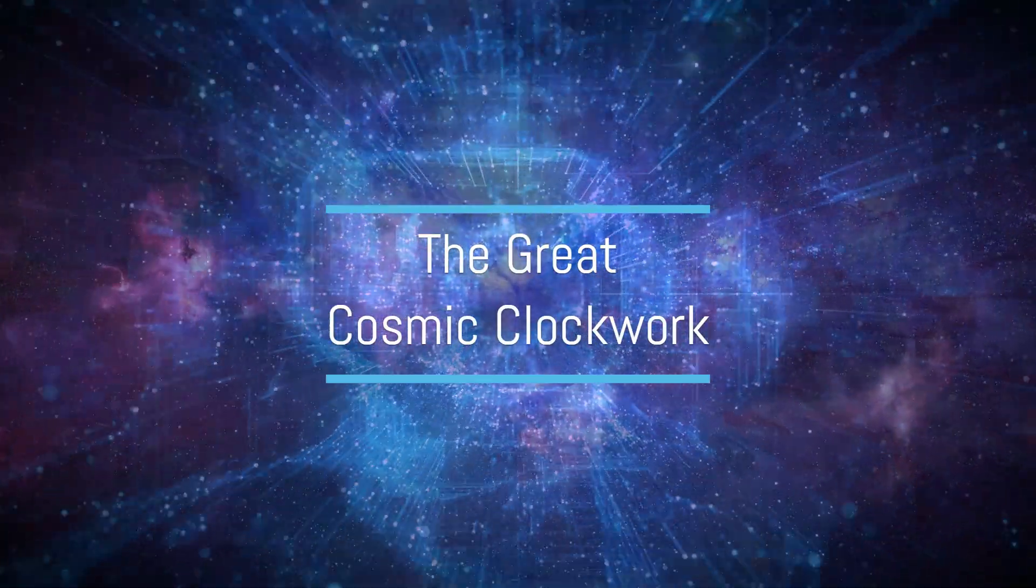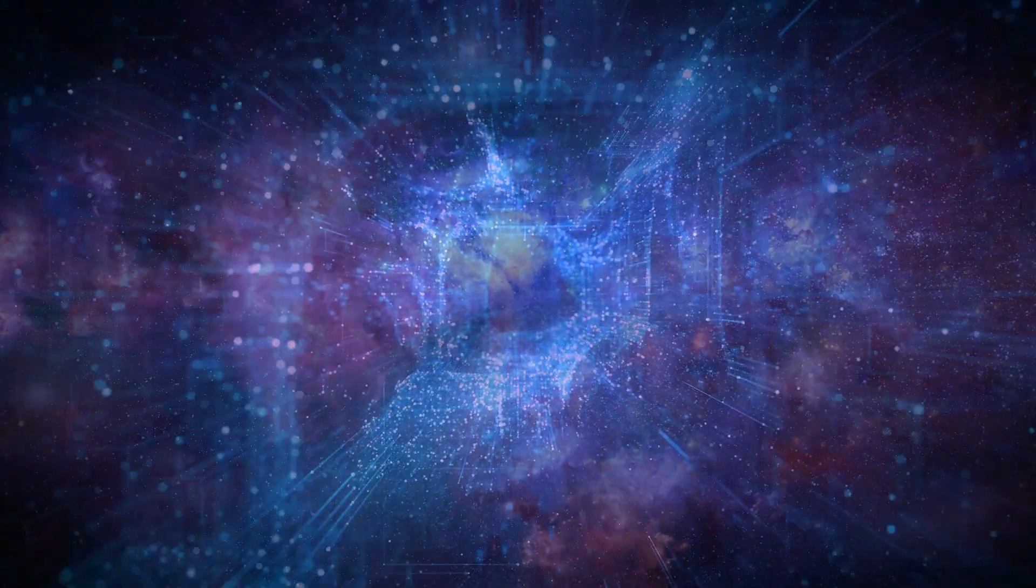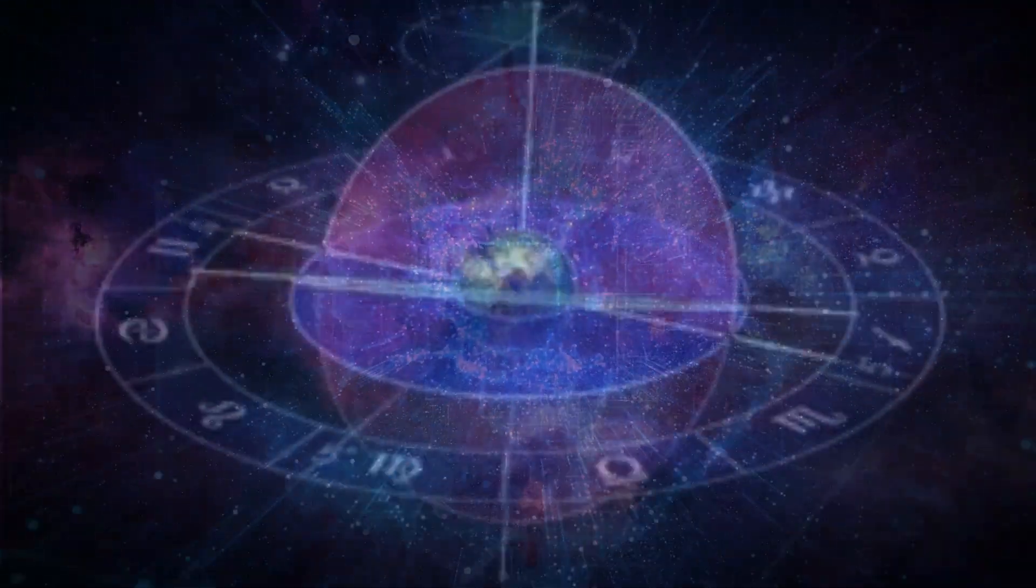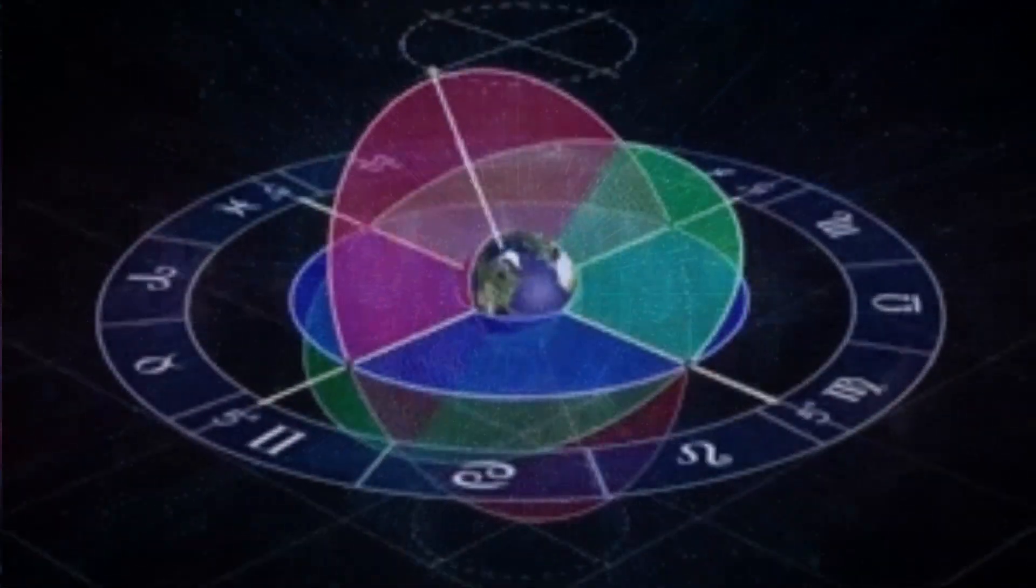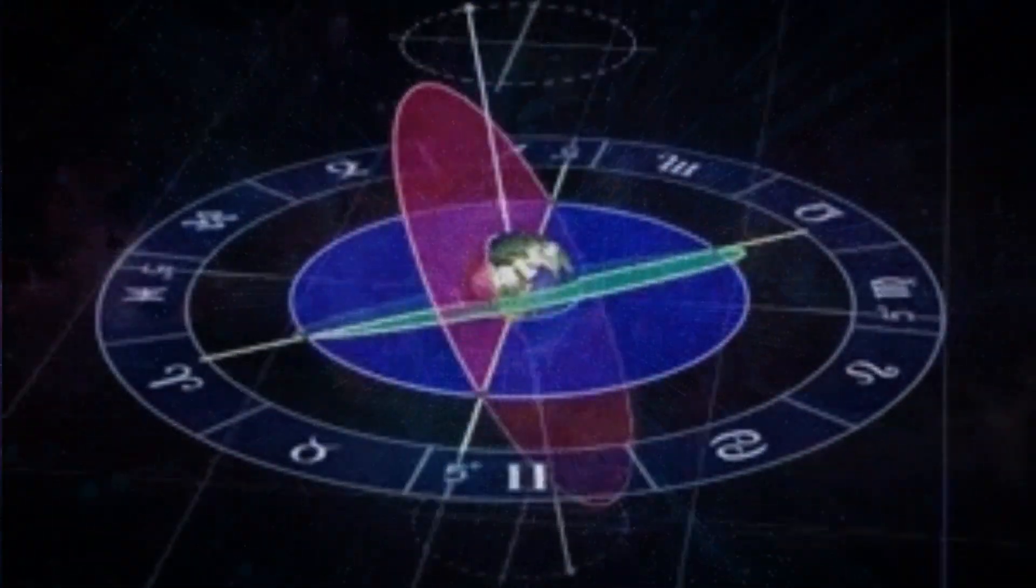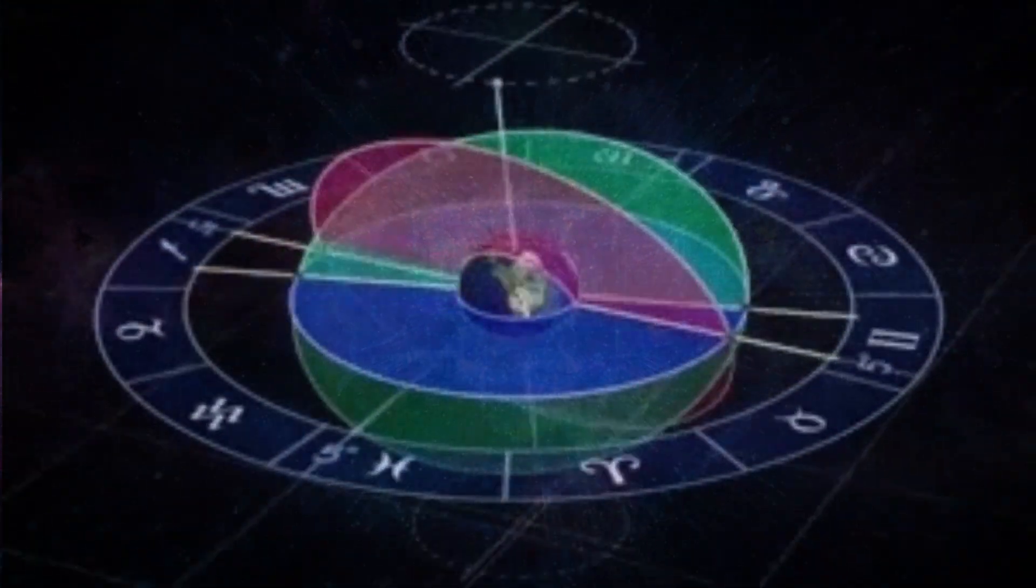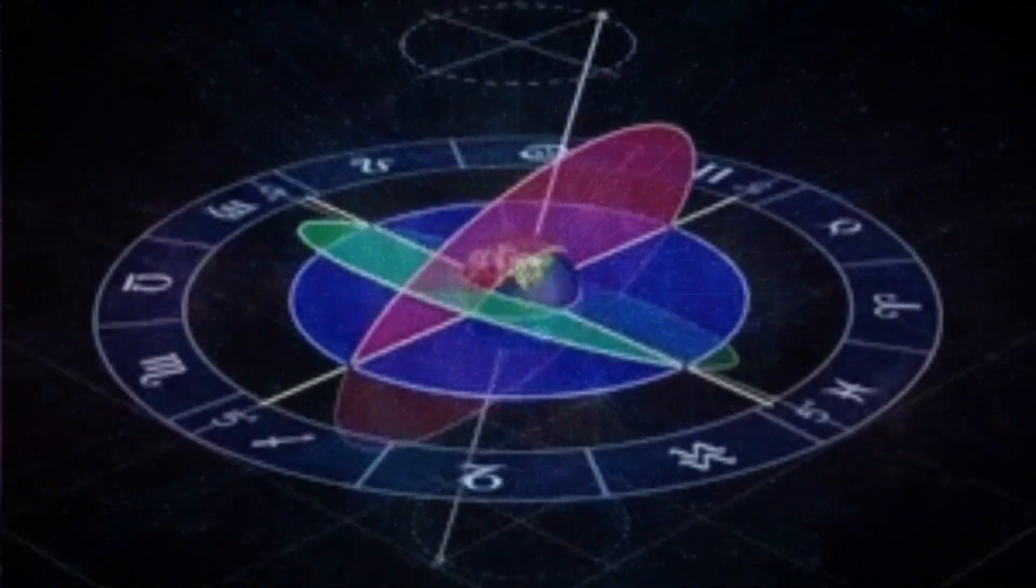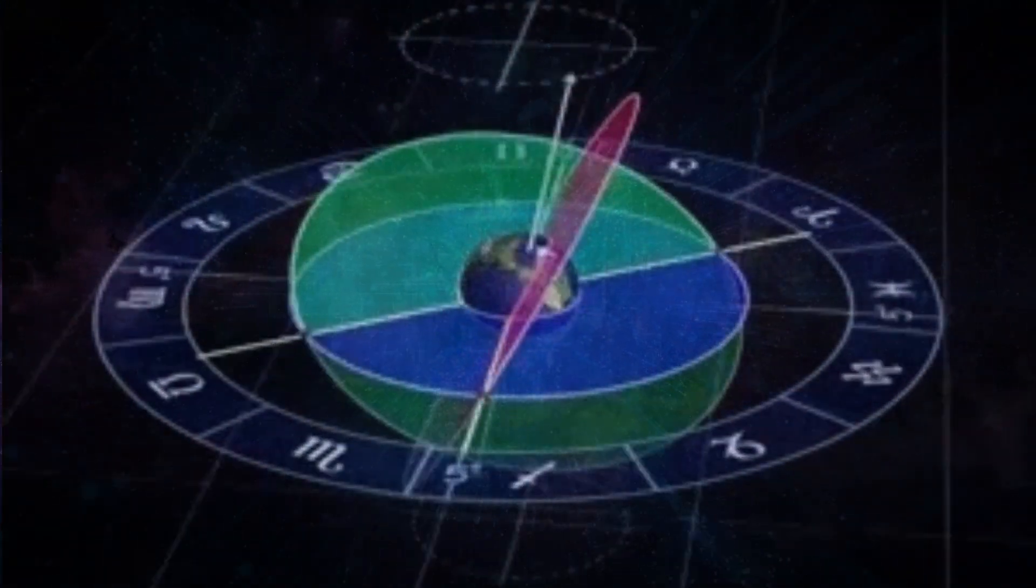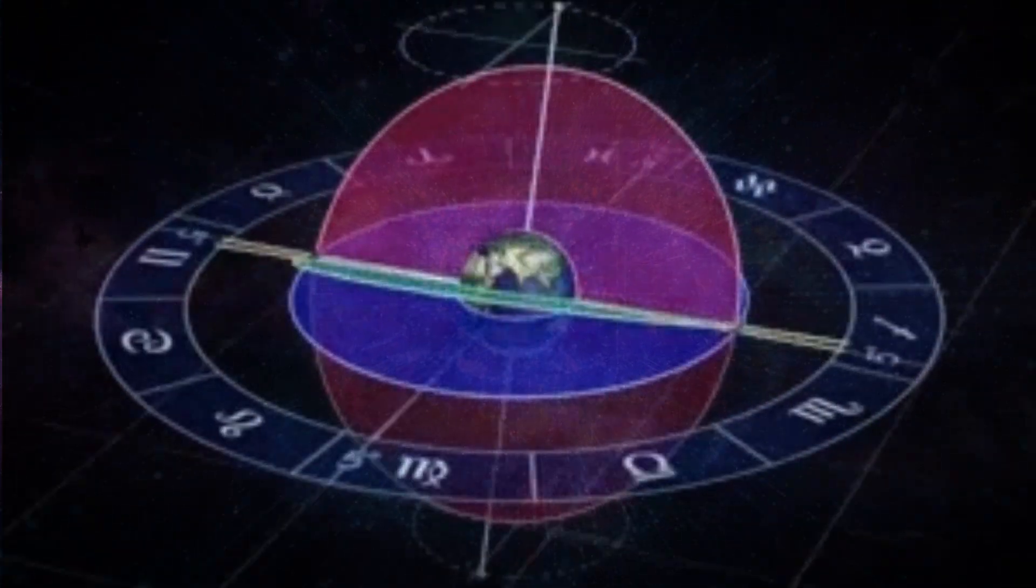The Great Cosmic Clockwork – the astronomical phenomenon known as the precession of the equinoxes – serves as a celestial metronome that orchestrates the transition between astrological ages. This slow and continuous waltz, taking roughly 25,920 years to complete a full cycle,